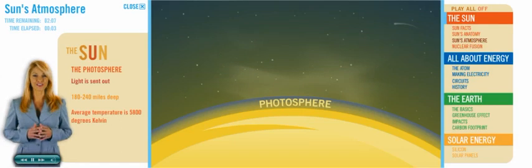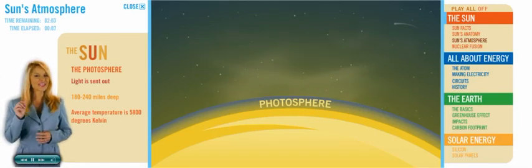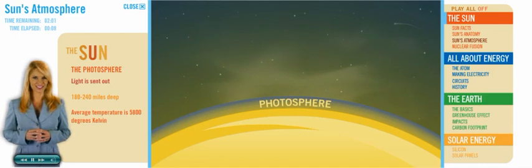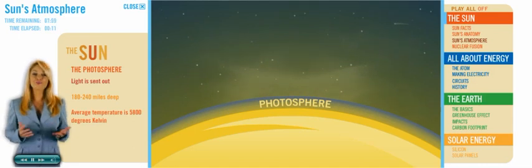The first layer of the atmosphere is called the photosphere. It's a very thin layer compared to the rest of the Sun, but it's the only part of the Sun that we can see from Earth.